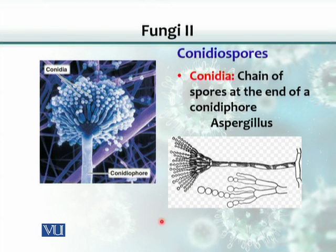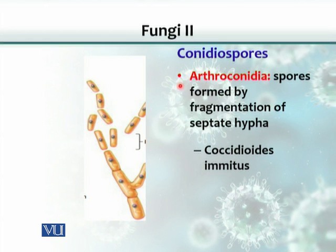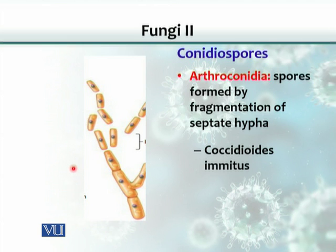There is another conidia spore called arthroconidia. 'Arthro' basically means a kind of joint. These spores are produced asexually by the fragmentation of the septa. The hypha divides and is shattered into small fragments; each fragment acts as a spore and can re-germinate when nutrients become available, growing into another thallus, mycelia, or hyphae, and bearing spores again.